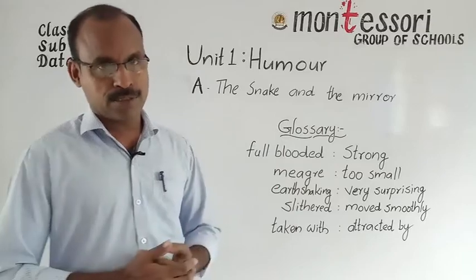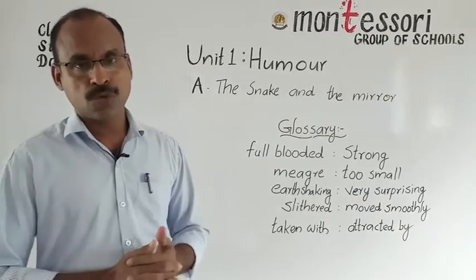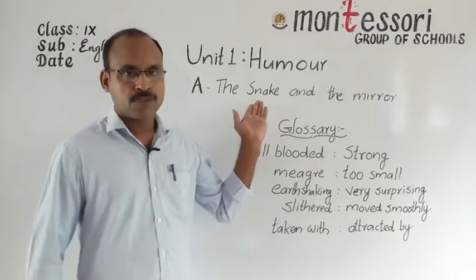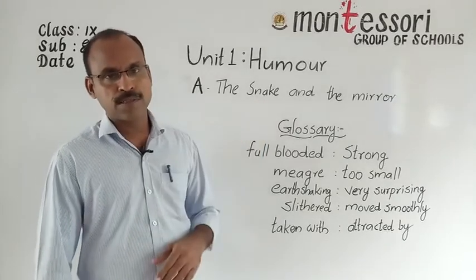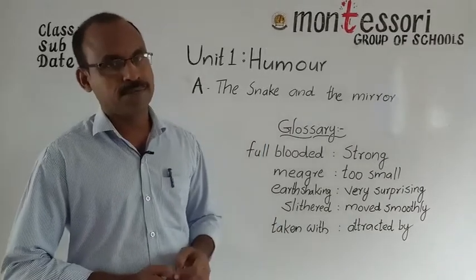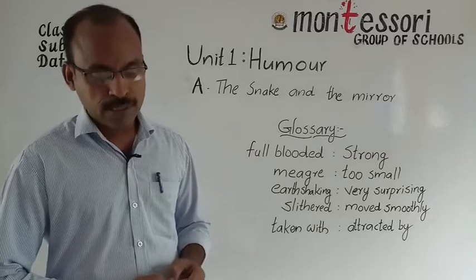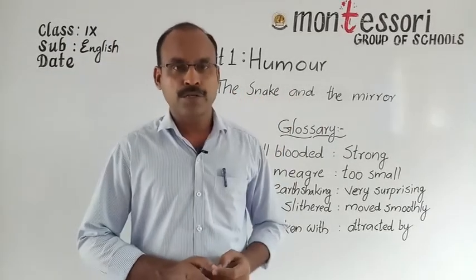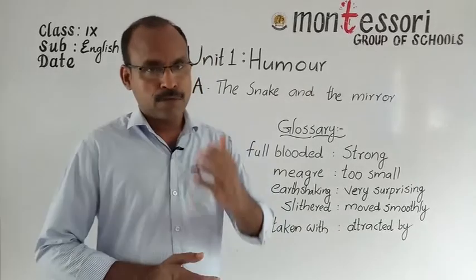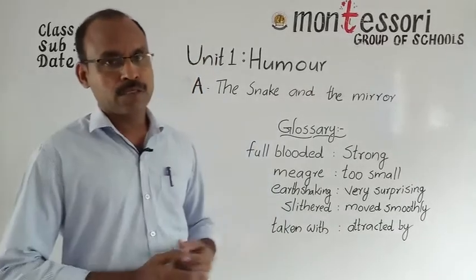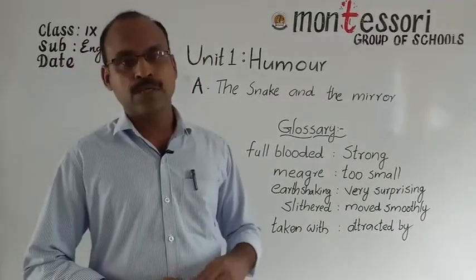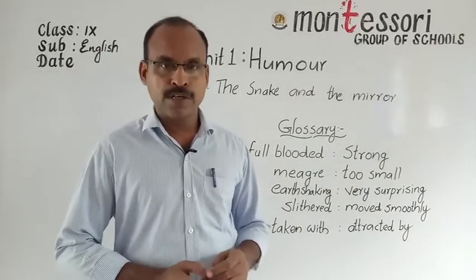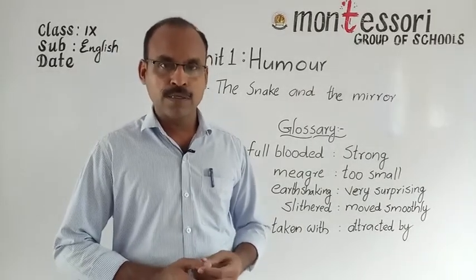This short story 'The Snake and the Mirror' is full of funny elements — the rats and the doctor sharing a room, the doctor's amusing thoughts about his future wife, the cobra coiling on his shoulder, the snake enjoying its reflection in the mirror, and the thief leaving only a dirty vest behind. This is how Unit 1, 'Humor,' starts with wit and humor. I hope you understood the summary of the lesson. For more details, contact your concerned teacher during online classes. I'll be back with another video on the next chapter — till then, bye.